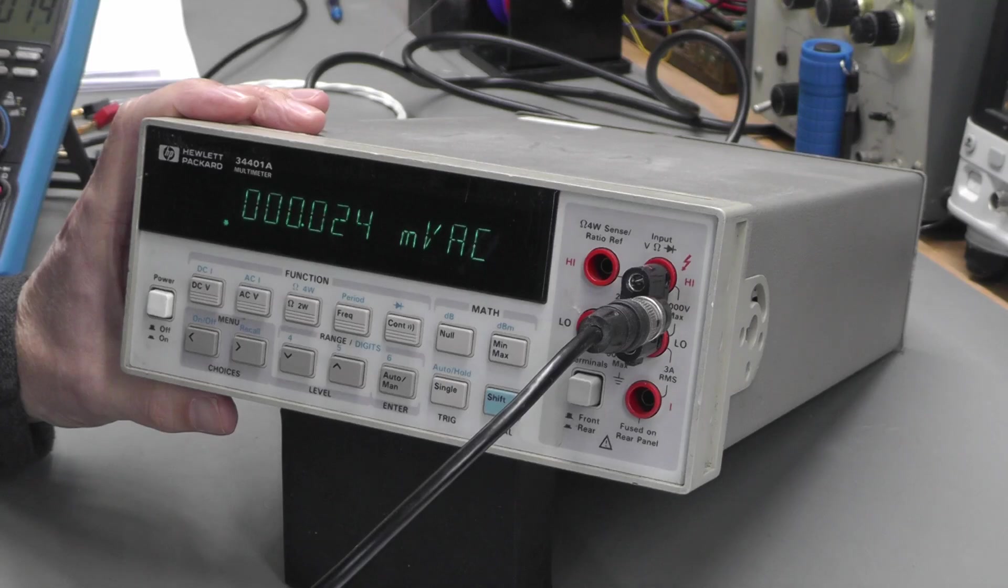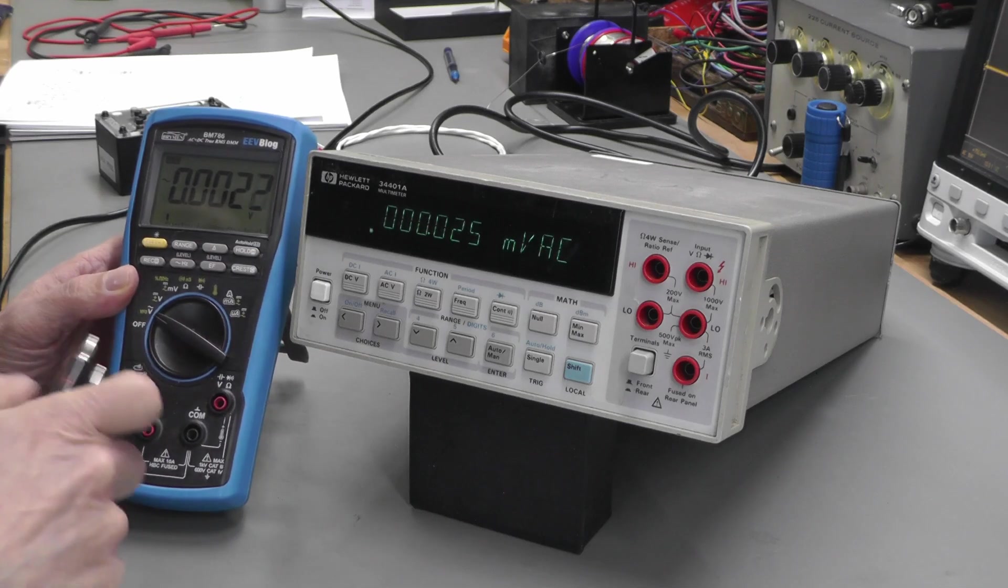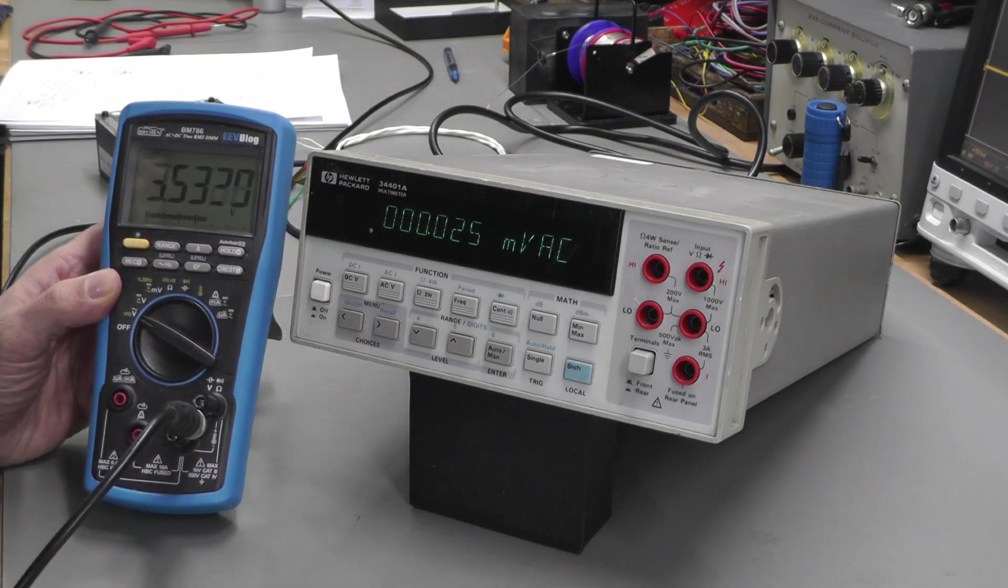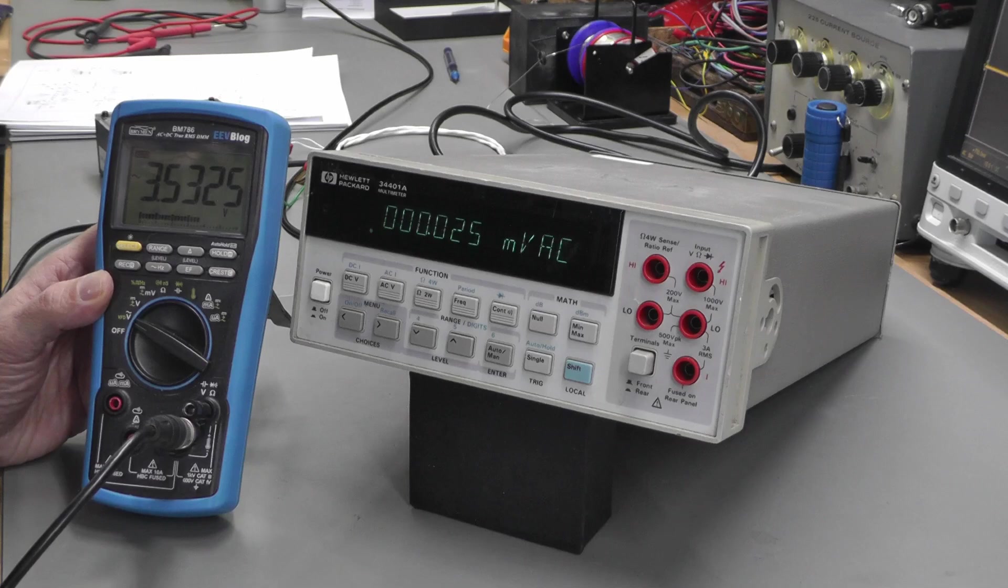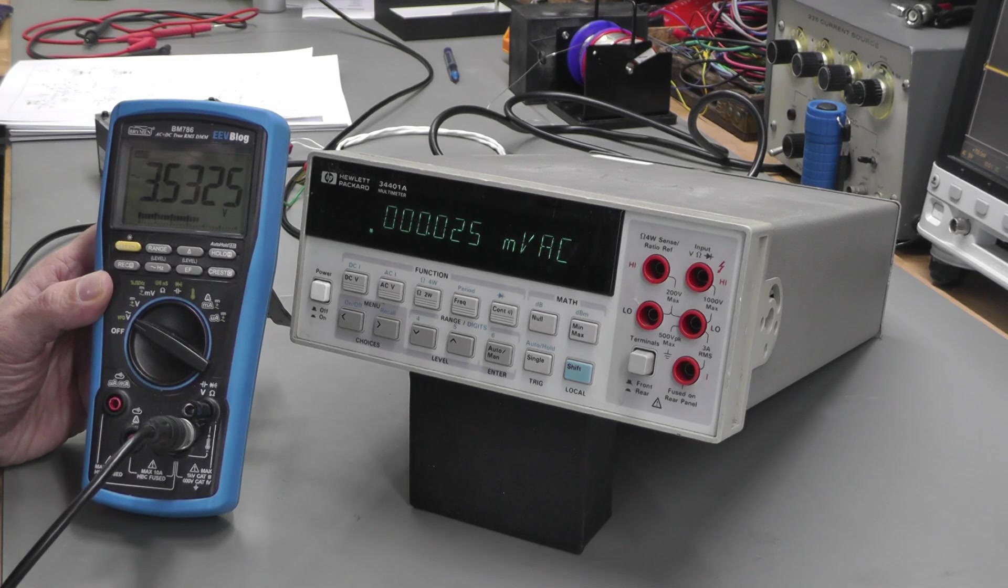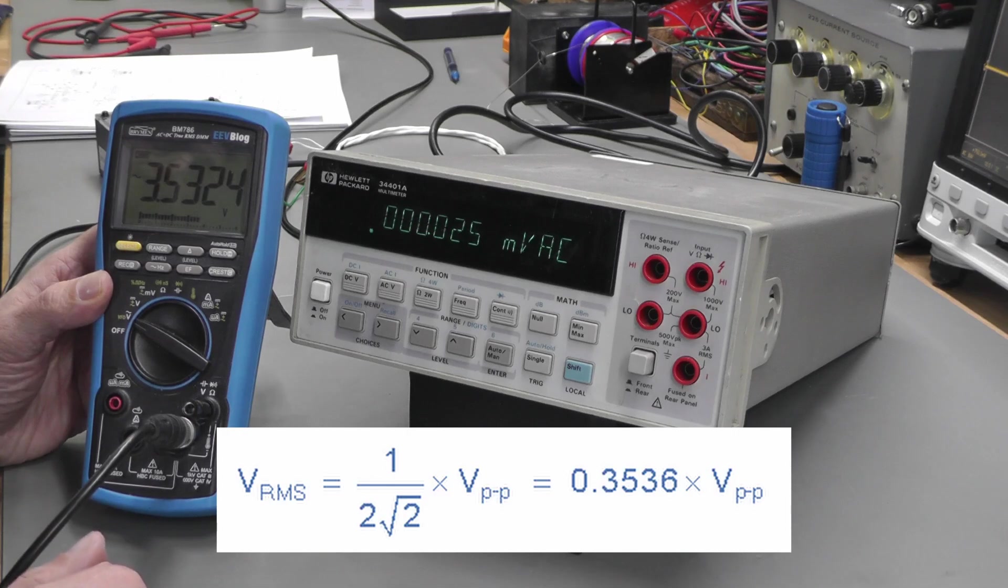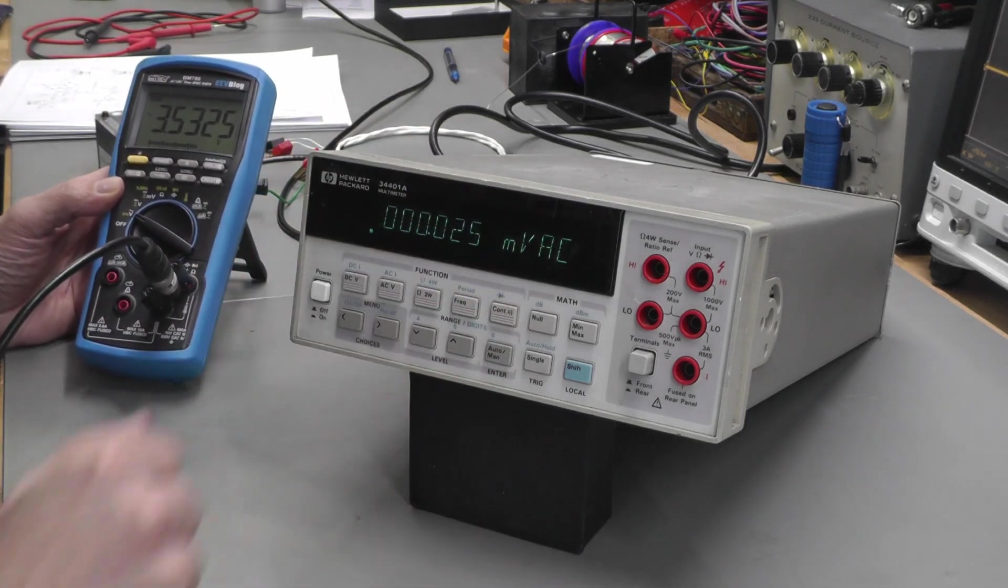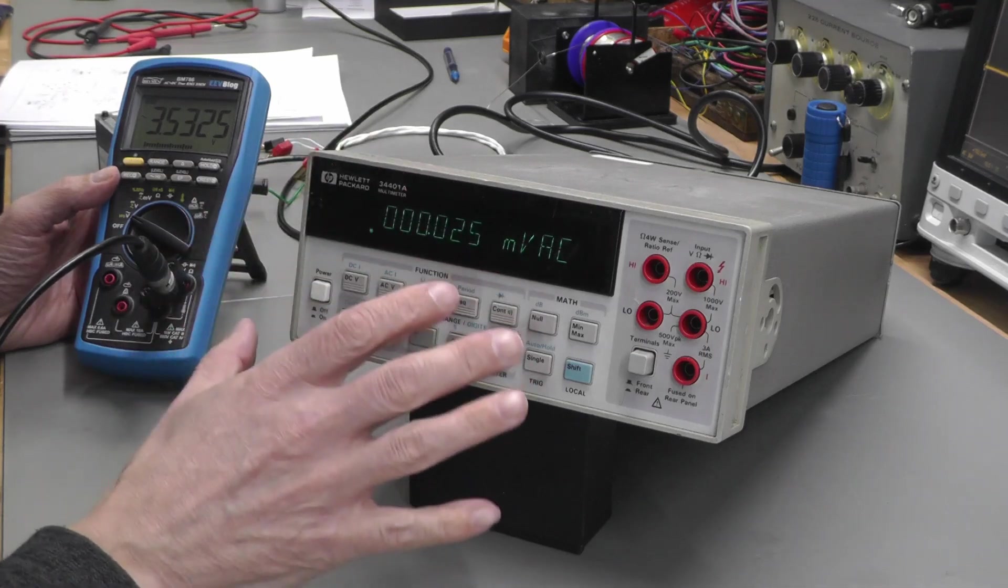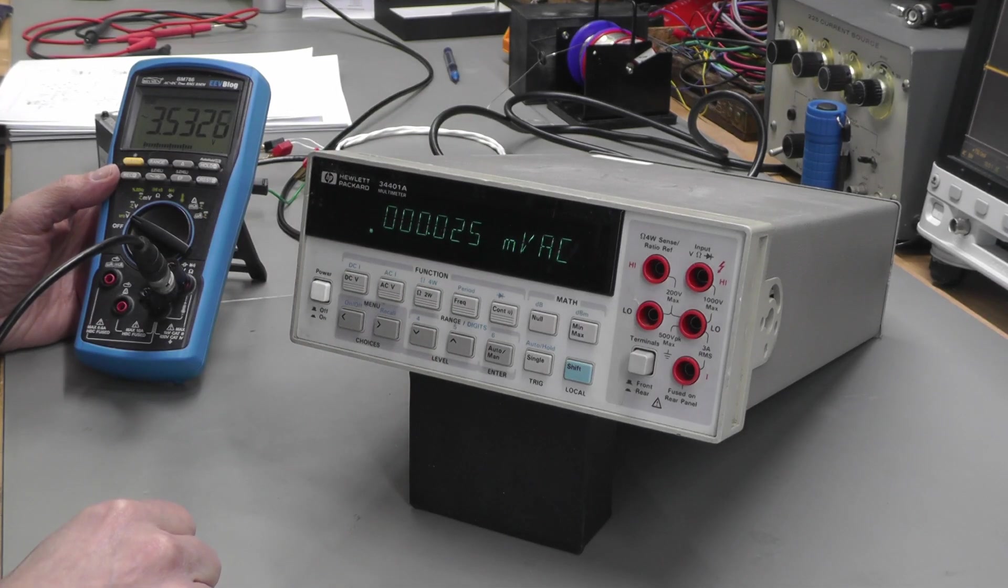This is from the 3245A. It's up and running, so let's go to AC volts and stick this in. I'm getting absolutely nothing on AC. Let's verify that this is working. Bring in my BM786 on AC. We're getting 3.53 volts from the 3245A. The 3245A is set to 10 volts peak-to-peak, so 1 over 2 root 2, that's 0.353 times 10 volts equals 3.53. That's what I should be getting on the 34401A, so it looks like the RMS converter part of the circuit is faulty. Let's tear it apart.